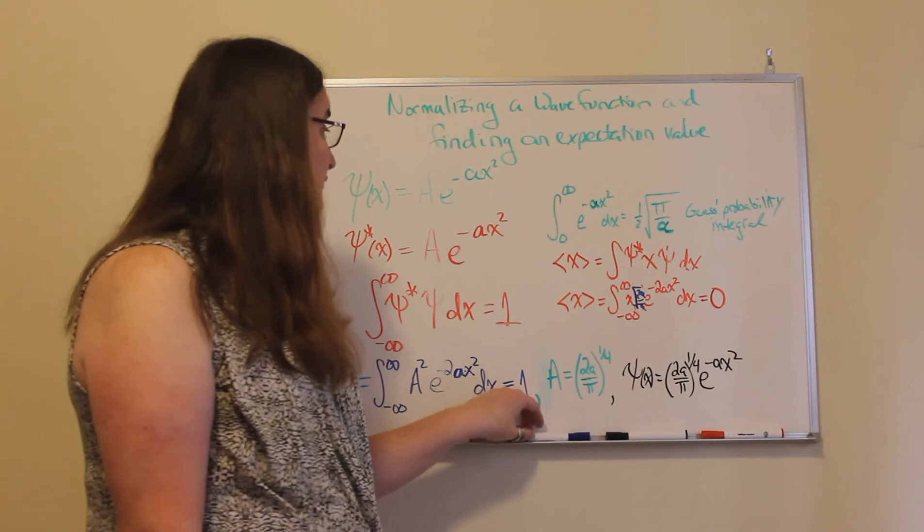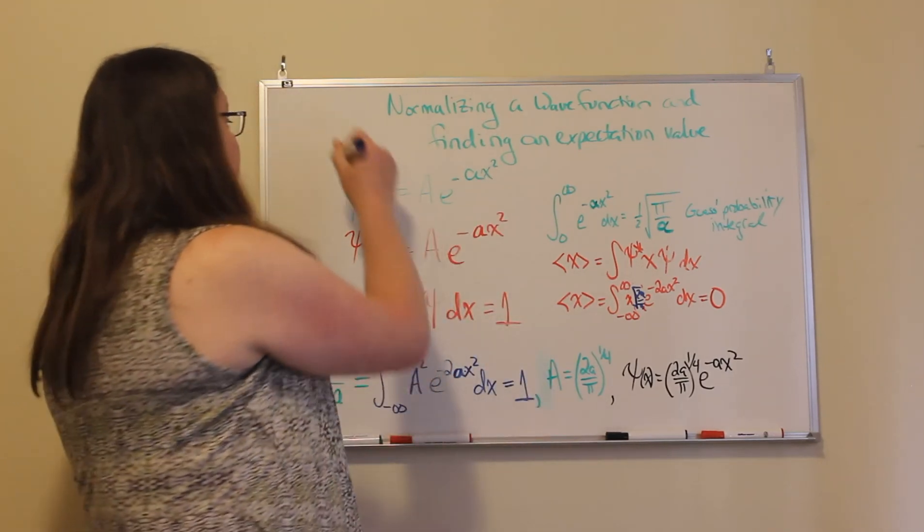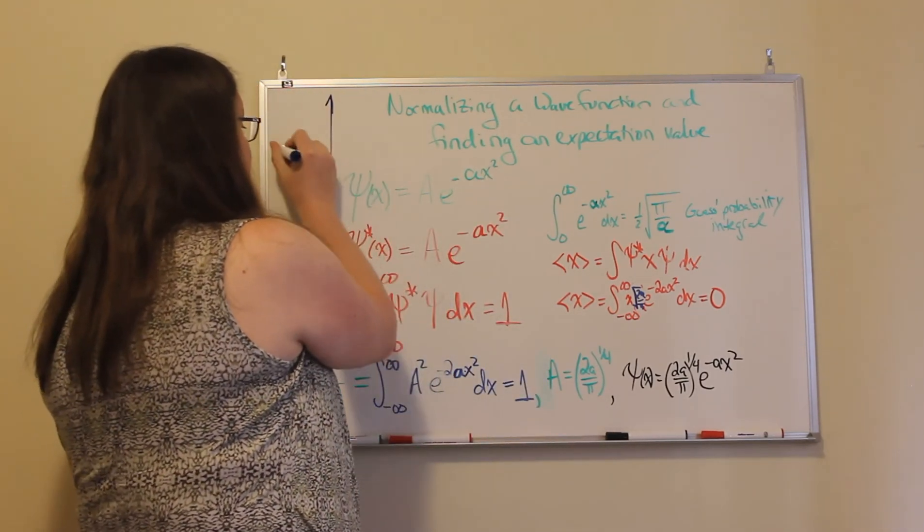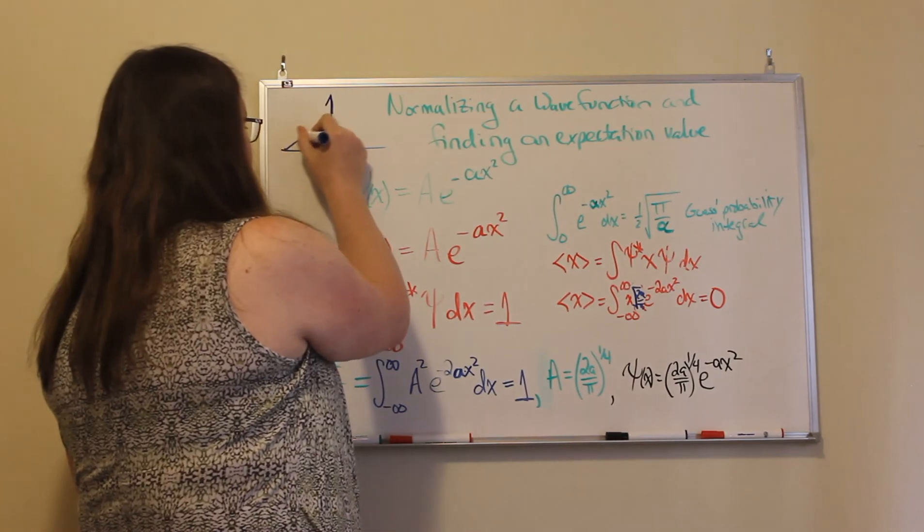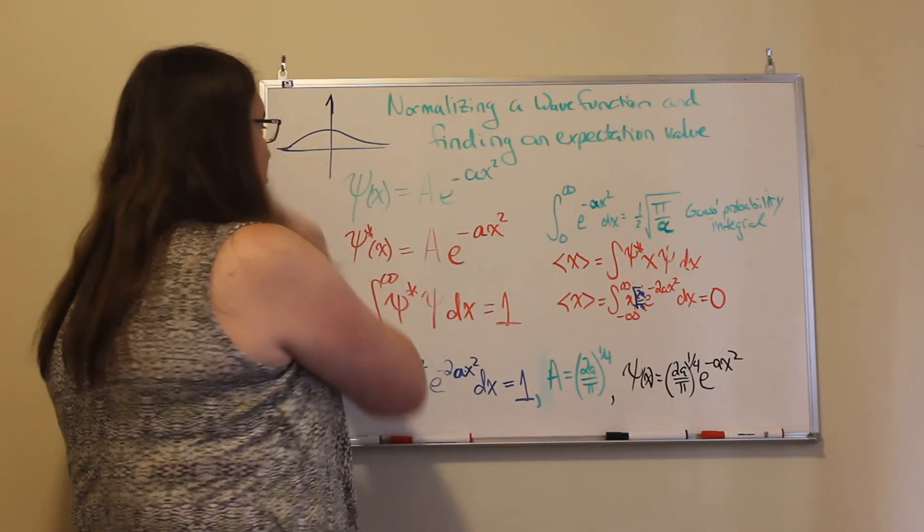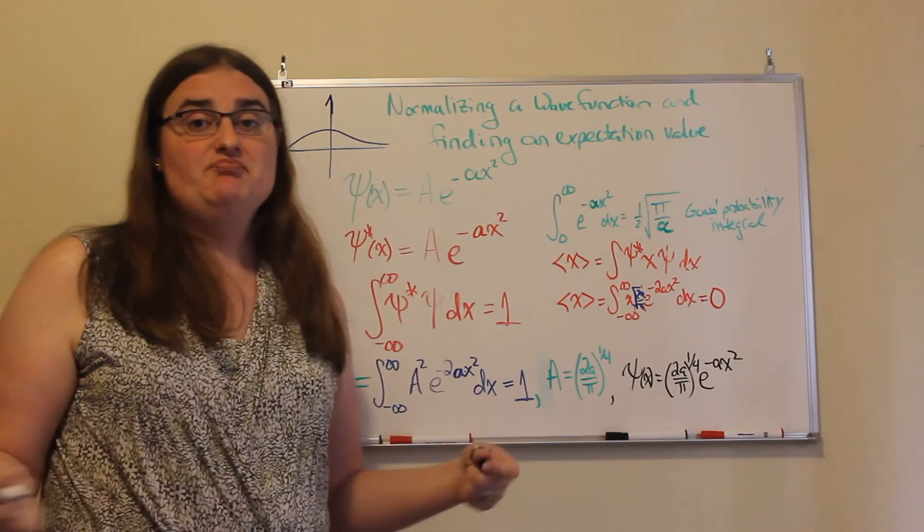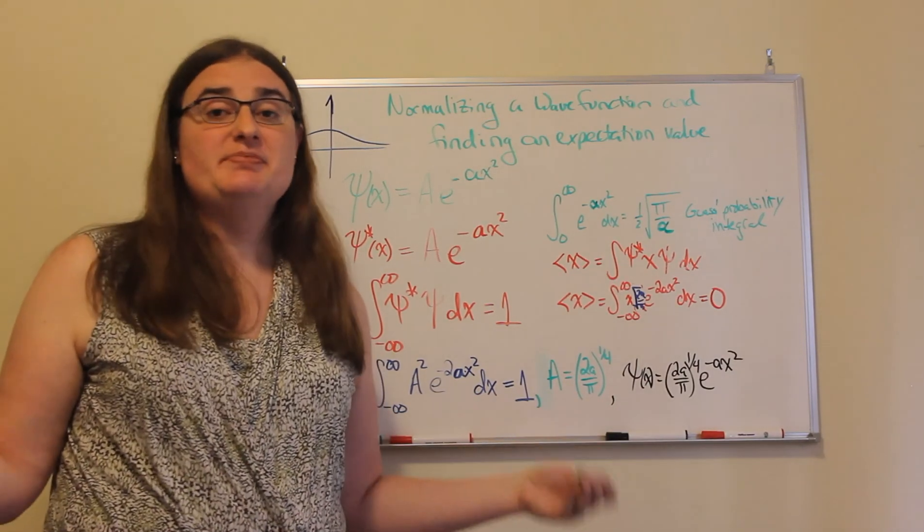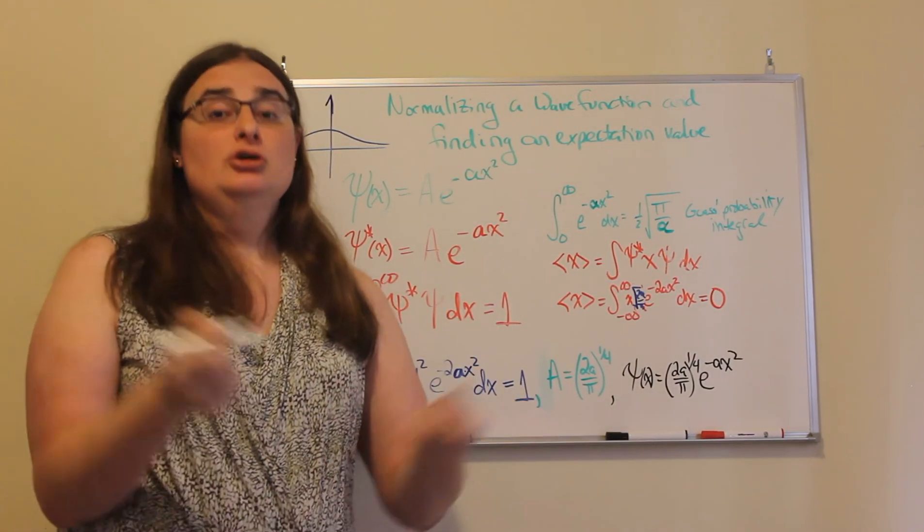Which if you've seen a Gaussian function that's centered at x equals 0, we would totally expect that the average of that function to be at the center, which is 0.